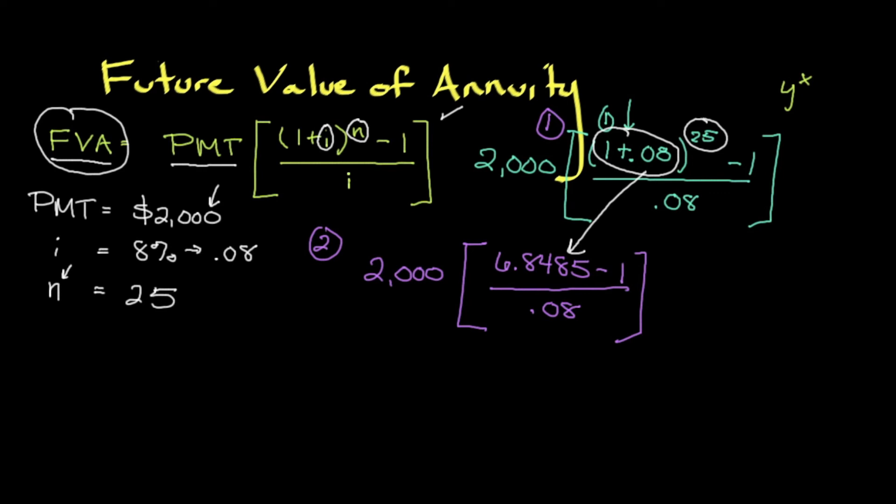The next step is we have to subtract 1, which is pretty simple - instead of 6.8485 we get 5.8485. The last thing we do in the brackets is divide 5.8485 by 0.08. In step three we should have still our $2,000, then in the brackets we have 73.1059. The last step is simple - we take $2,000 and multiply that by 73.1059.